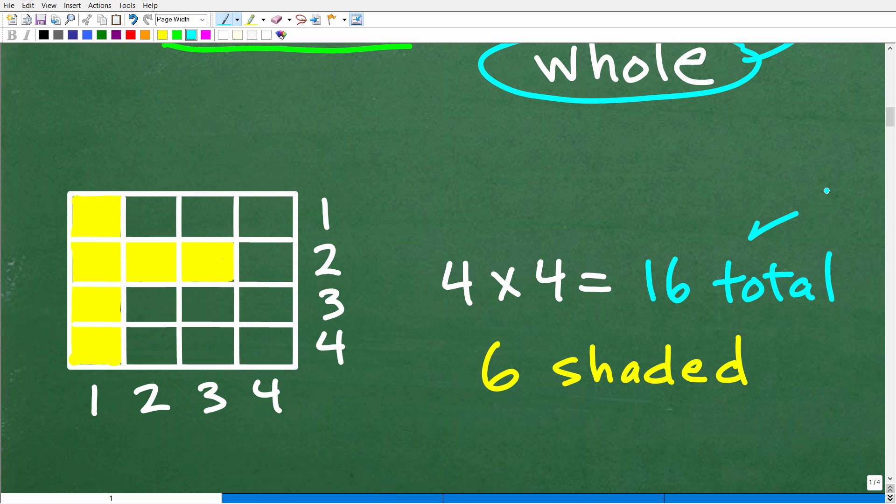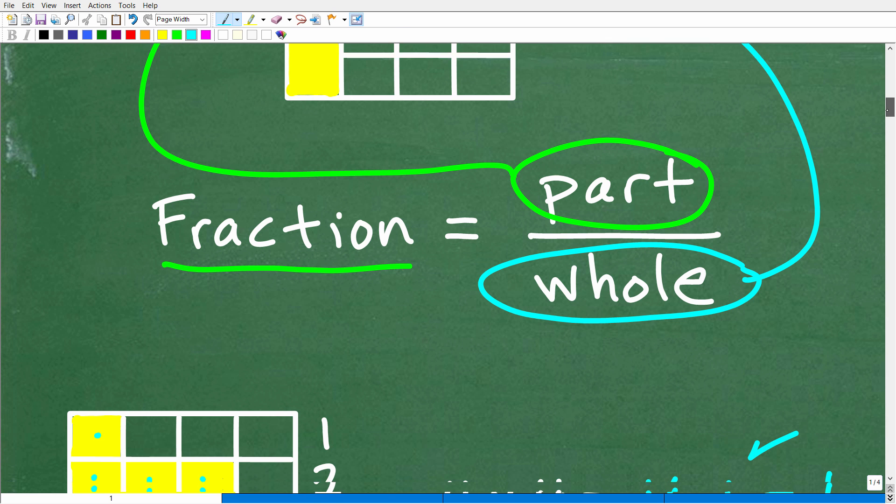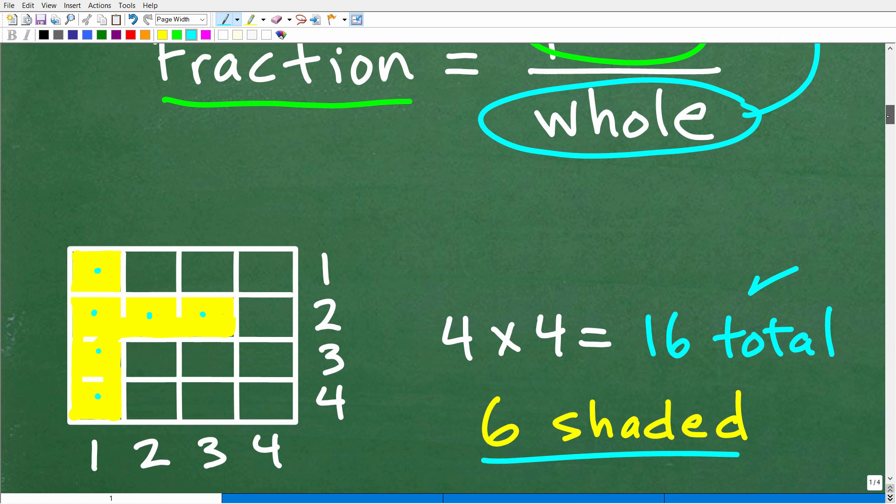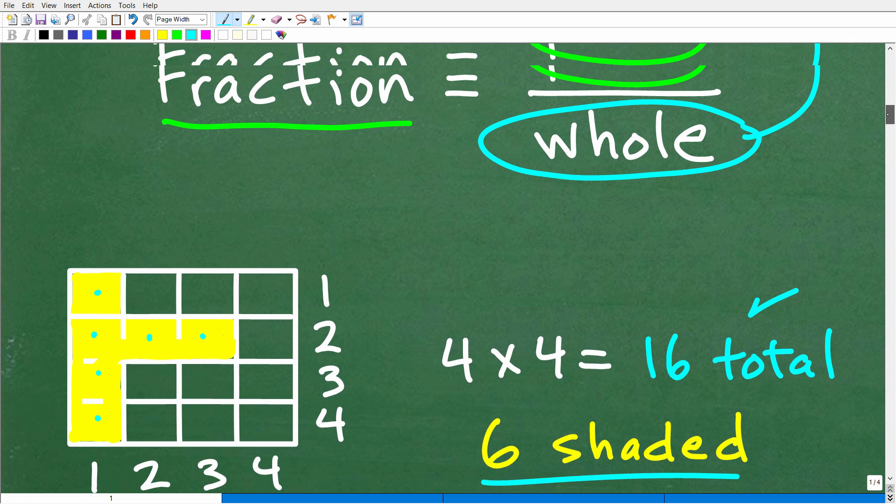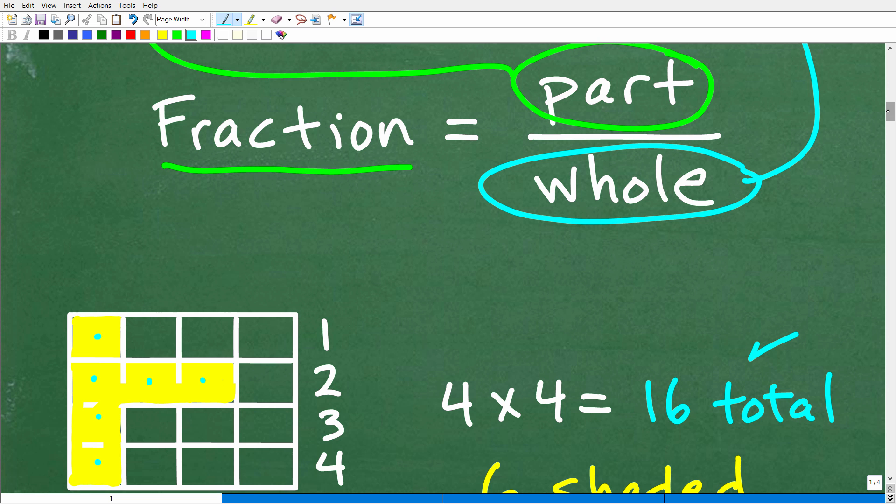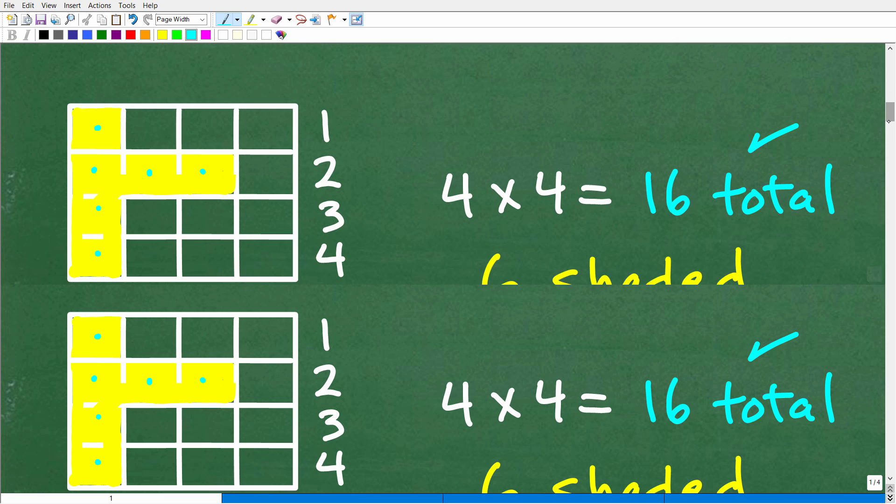So how many of these boxes are shaded? Well, we have one, two, three, four, five, six. So six are shaded. So what do you think we're going to do next? Well, if you're thinking that we're going to express these two numbers, the total and the part, as a fraction, well, you would be absolutely correct. So let's go ahead and take that next step, which of course is having you quickly subscribe to my YouTube channel.